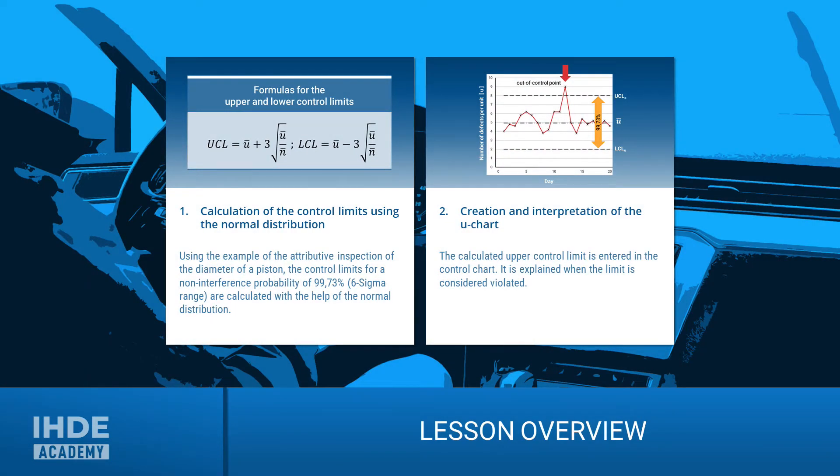This lesson is divided into two chapters. In the first chapter, we will calculate the control limits for a non-interference probability of 99.73%. And in the second, we will enter this limit into the control chart and discuss how it should be interpreted.